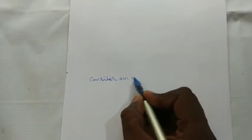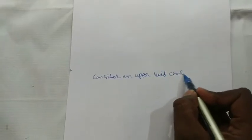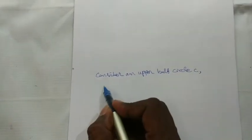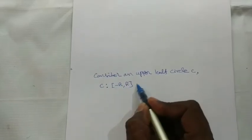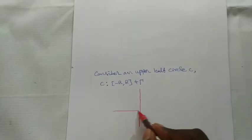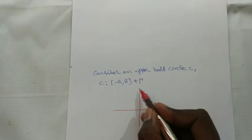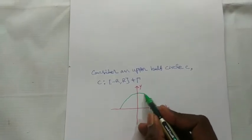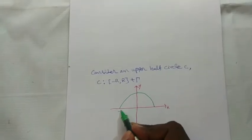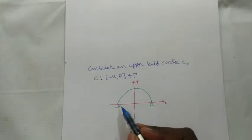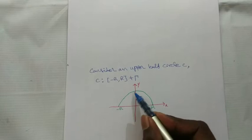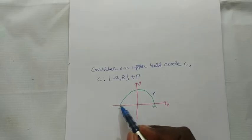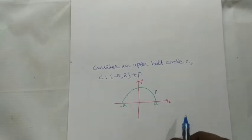In this type, consider an upper half circle C such that C is from minus R to plus R plus gamma. From the diagram, the y-axis is the imaginary axis and the x-axis is the real axis. The upper half circle goes from minus R to plus R, and the curved region is taken as gamma.